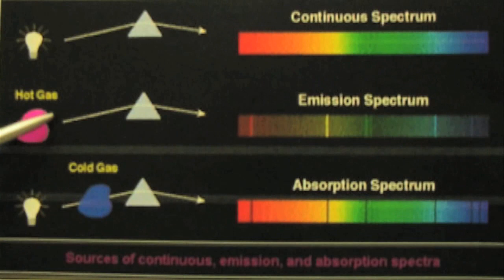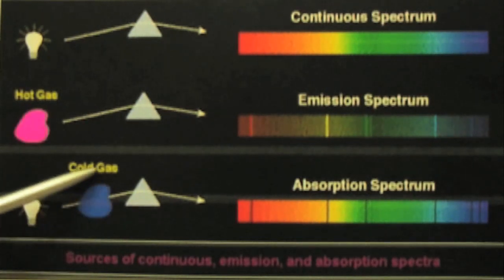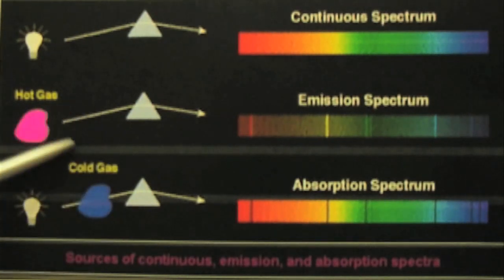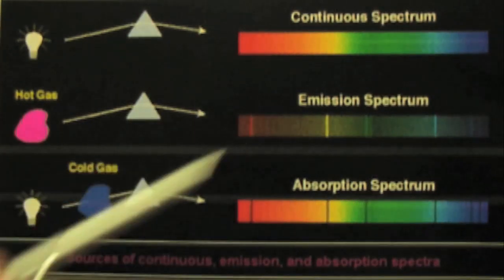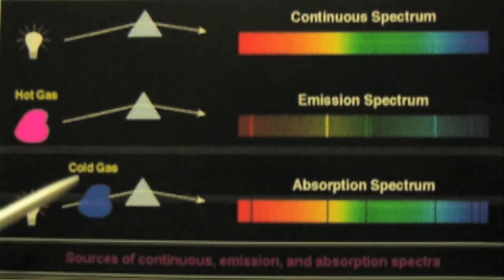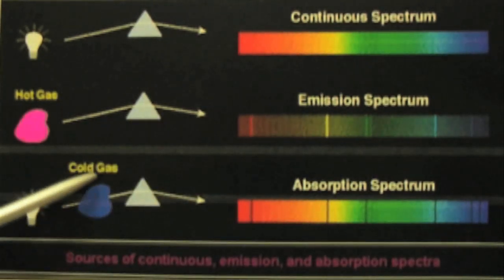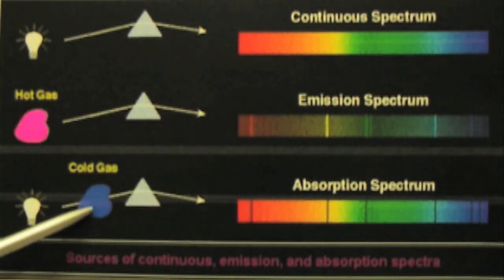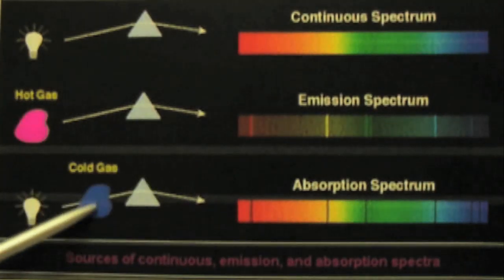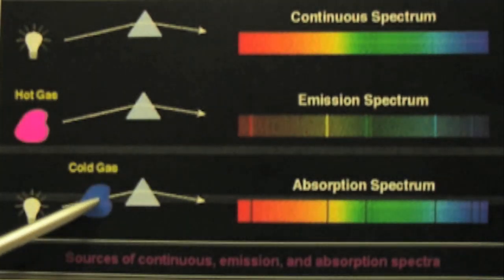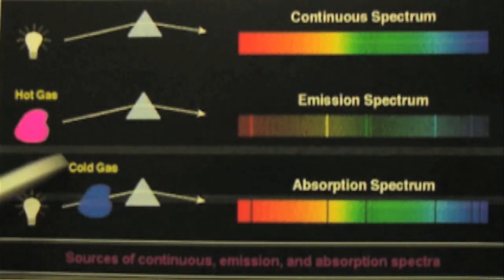So in front of a mercury vapor lamp, if you put mercury vapor, the mercury vapor will create a shadow. And although we can't see the gas, we will see the shadow that the gas creates by absorbing the light from the mercury vapor lamp.